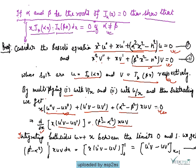Now integrating both sides with respect to x between the limits 0 and 1. After integrating and taking limits 0 to 1, we have (β² - α²)·∫₀¹ x·uv dx = [x(u'v - uv')]₀¹.